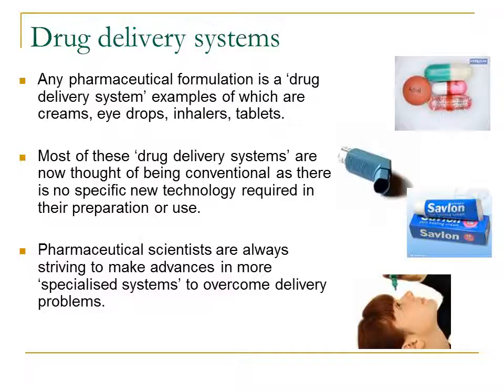There are different types of drug delivery systems. Any pharmaceutical formulation is a drug delivery system, and examples of those are creams, eye drops, inhalers, tablets, and many more. Most of these are now considered conventional, as there is no specific new technology required in their preparation or use. Pharmaceutical scientists are always striving to make advances in more specialized systems to overcome delivery problems.